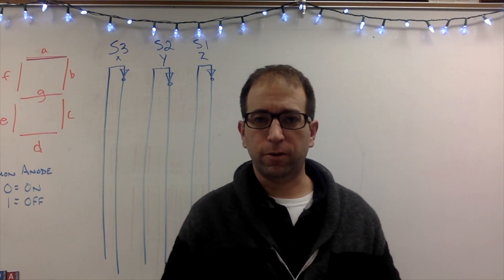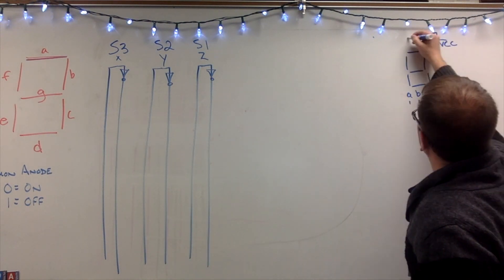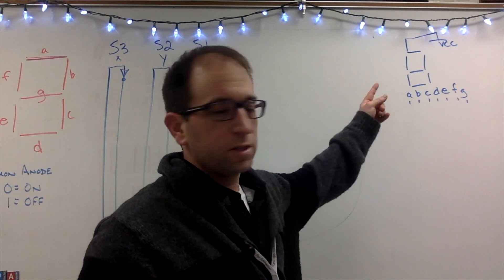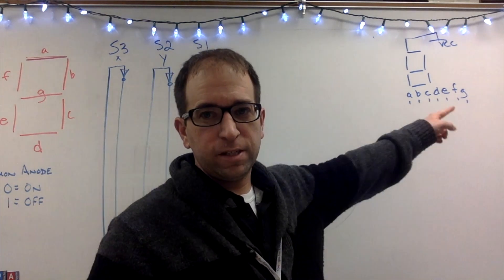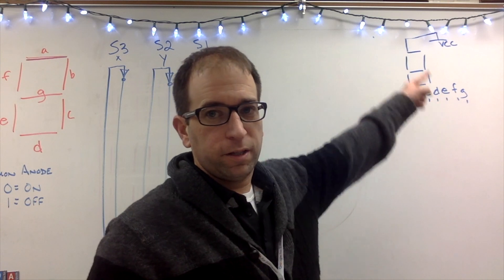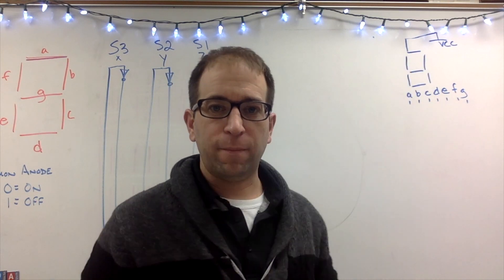Now I'm going to draw my common anode over here. So I've got my seven segment display over there. I've got ABCDEFG going across the bottom where I'll plug it in and then up top here I've got power.